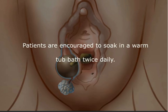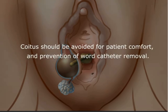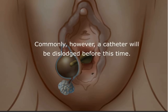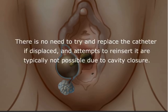Abscesses are typically surrounded by significant cellulitis, and in such cases broad-spectrum antibiotics to treat a polymicrobial infection are warranted. Patients are encouraged to soak in a warm tub bath twice daily. Coitus should be avoided for patient comfort and prevention of word catheter removal. Ideally, the catheter is left in place for 4–6 weeks. Commonly, however, a catheter will be dislodged before this time. There is no need to try and replace the catheter if displaced, and attempts to reinsert it are typically not possible due to cavity closure.